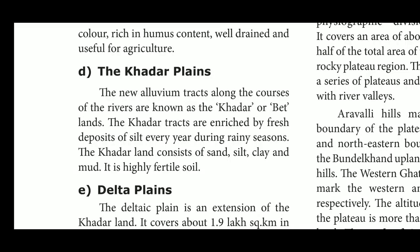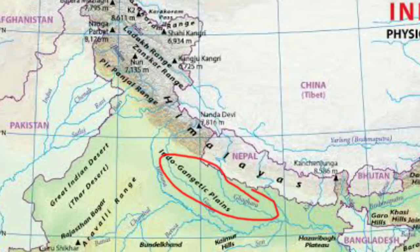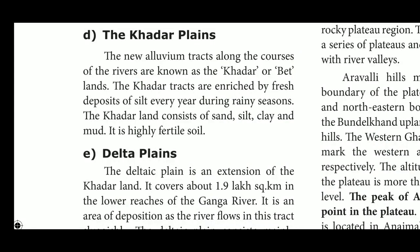The fifth type is the Delta Plain, which is an extension of the Khadar land. It covers about 1.9 lakh square kilometers in the lower reaches of the Ganga Valley. It is an area of deposition as the river flows through this tract. The deltaic plain consists mainly of old mud, new mud, and clay. In the delta region, the upland areas are called Chars, while the marshes are called Bills.